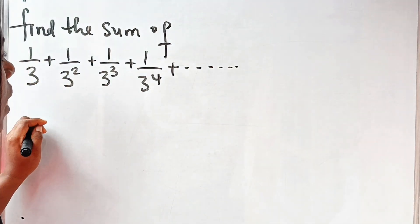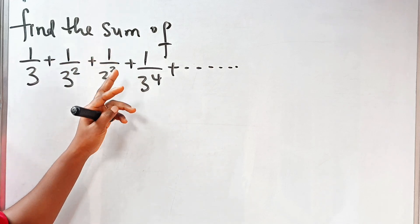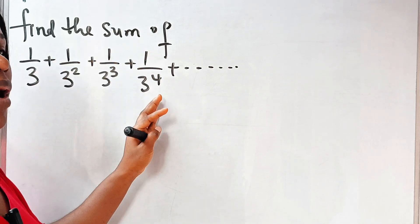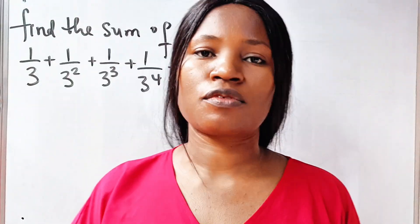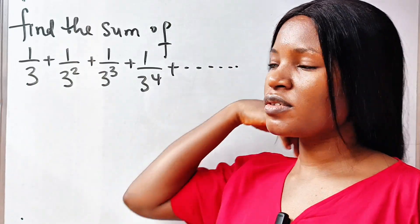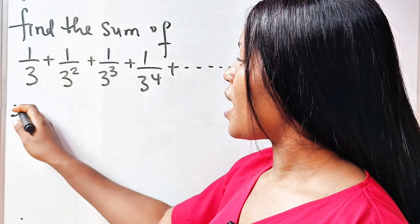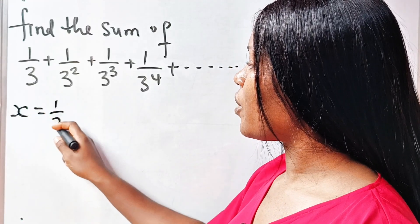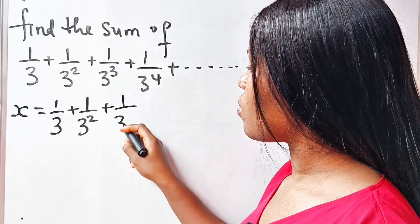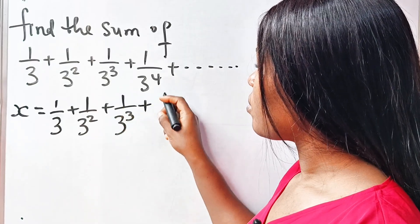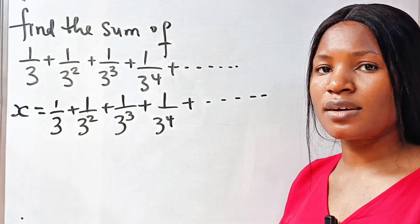First of all, we are asked to find the sum of 1 over 3 plus 1 over 3 squared plus 1 over 3 cubed plus 1 over 3 to the power of 4, and it continues like that. The first thing we need to do is let's call this x. So it means that x is equal to 1 over 3 plus 1 over 3 squared plus 1 over 3 to the power of 3 plus 1 over 3 to the power of 4, and it continues like that.